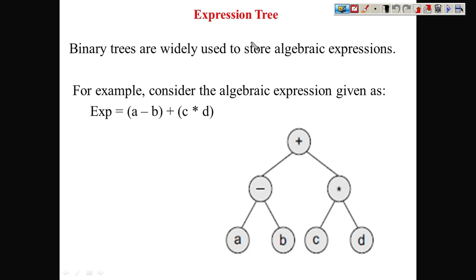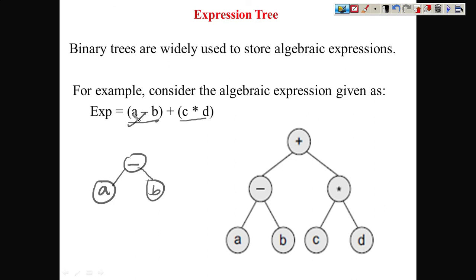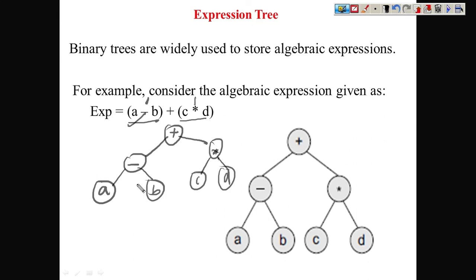Next we have expression trees. A binary tree can also be used to represent an expression. For example, the expression A minus B plus C into D: we write A minus B first — keep in mind that operands always occur at the leaves and operators act as internal nodes. So we write A minus B with minus as the operator, and then C multiplied by D with the multiply operator. These two terms are then connected with the plus operator. This is how we can represent any expression using a binary tree.